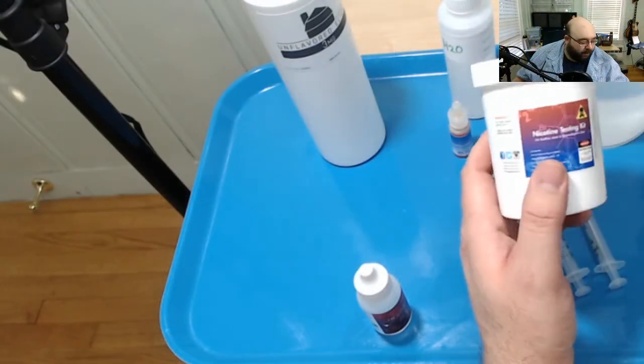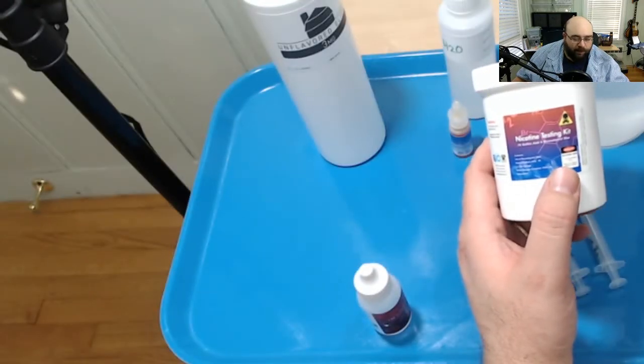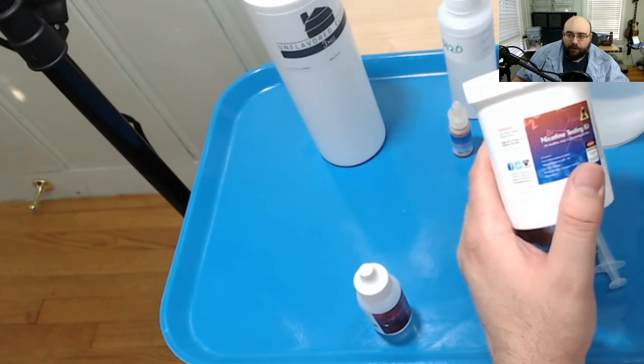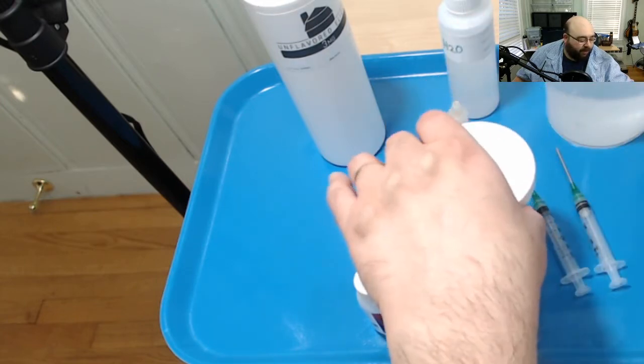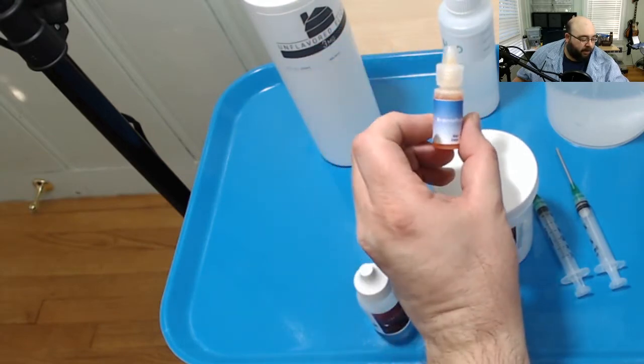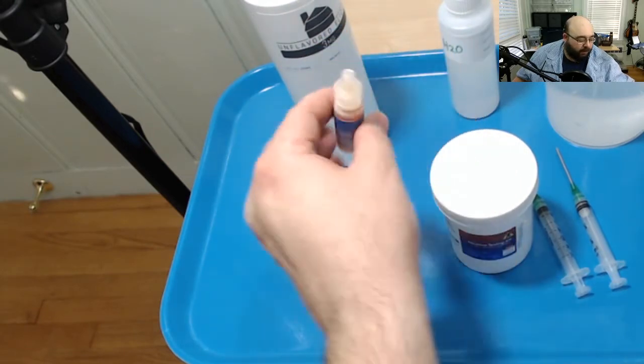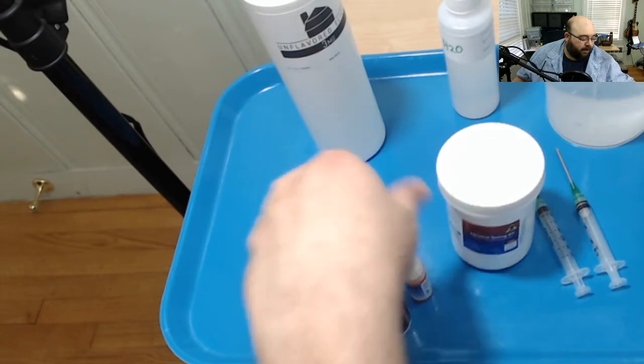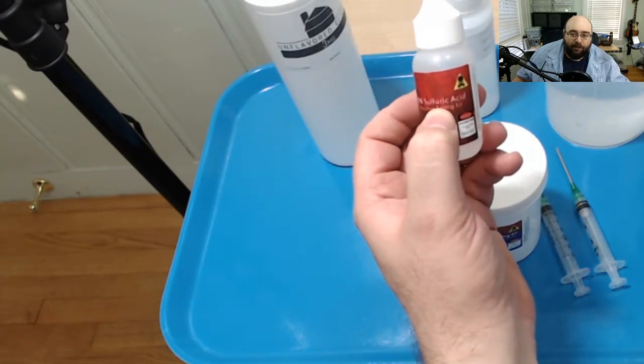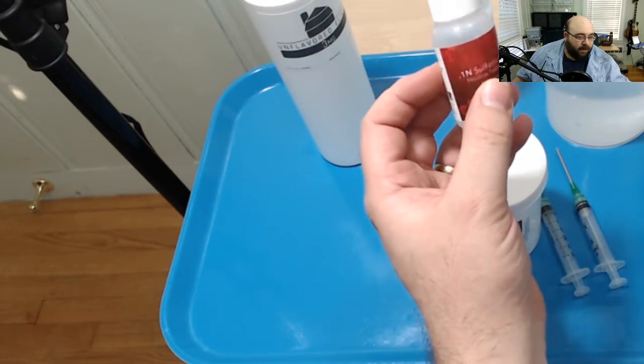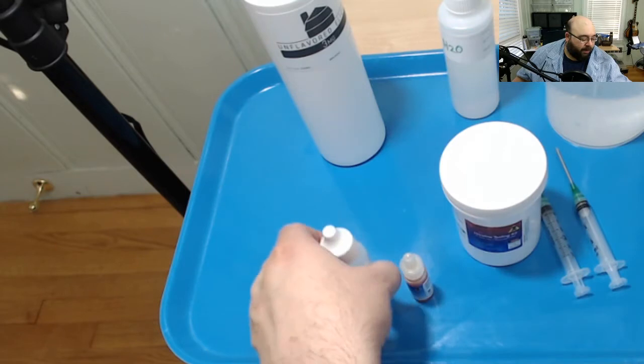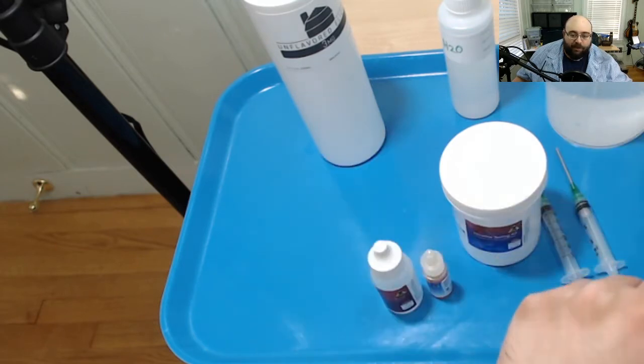So I'm using this test kit that I got I think from ECX, yeah from ecxpress.com. It's basically this cup and a small container of bromothymol blue and a container of 0.1n sulfuric acid. And you can pick these up individually or you can pick them up at almost any place that sells nicotine should have a test kit.